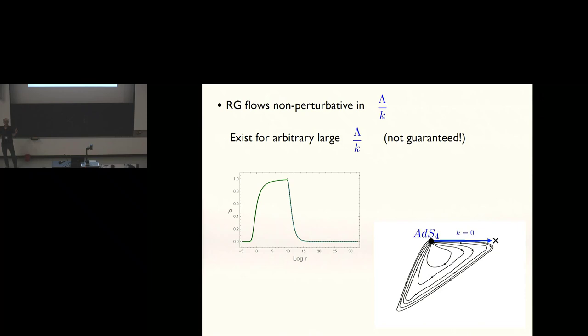And you can do that. It turns out with this model that they exist for arbitrary large values of lambda over k. Now this is not guaranteed. The perturbative ones are guaranteed, but as lambda over k gets big, the RG flow could go off to some other behavior in the infrared. The only thing you're guaranteed is a boomerang flow for small lambda over k. But for this model, they exist for arbitrary large values of lambda over k. When that happens, some interesting things happen, which I now want to explain. Here's a little picture. Here's our AdS4. Let's think of this little loop as a boomerang flow that's perturbative in lambda over k. Then we start cranking up lambda over k. We keep coming back to the AdS.